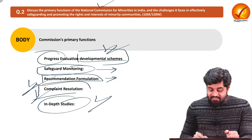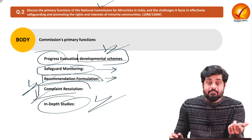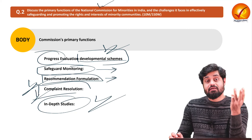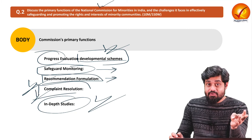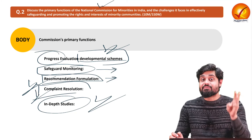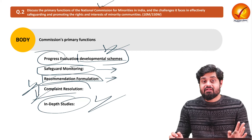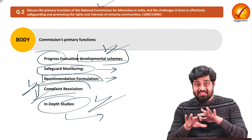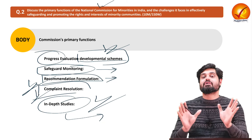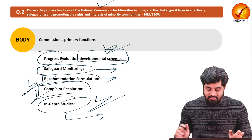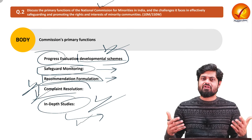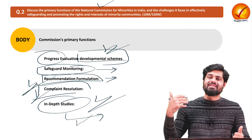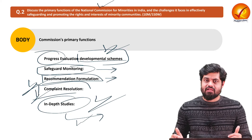In-depth studies and research is a primary function — in order to evaluate, recommend, and ensure that safeguards are actually implemented, the commission must conduct in-depth studies. Without conducting research, it will not be able to produce quality recommendations. Various PhD scholars are associated with the commission, including people with qualifications from institutions like JNU, who work in these organizations. That covers the primary functions.